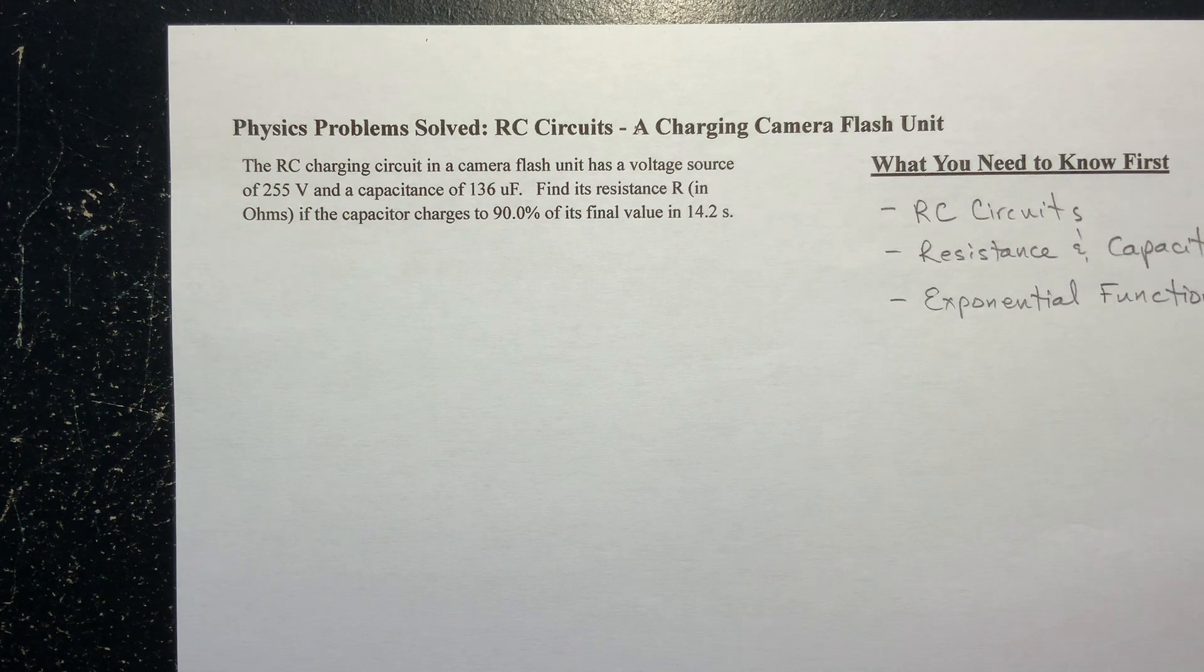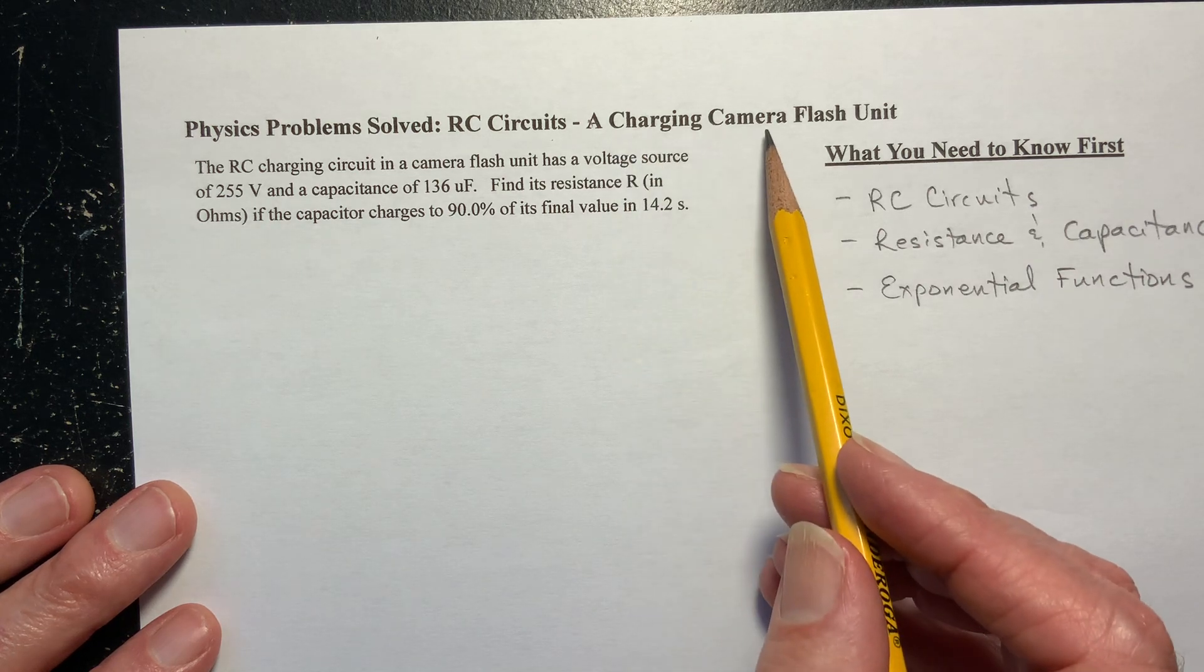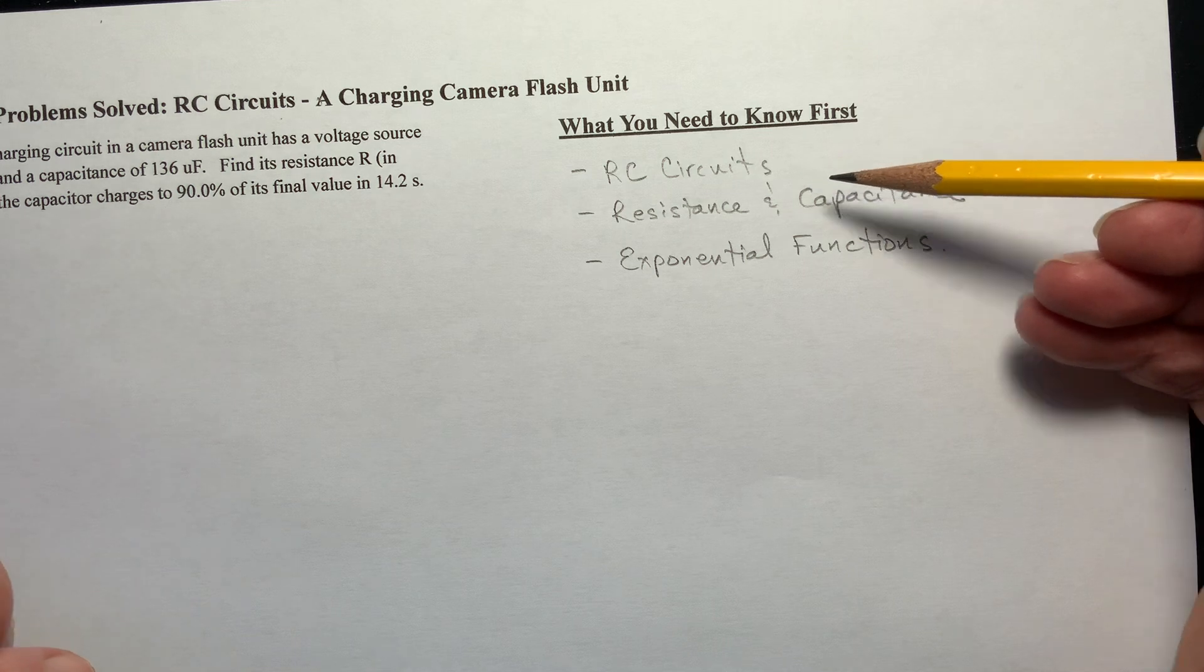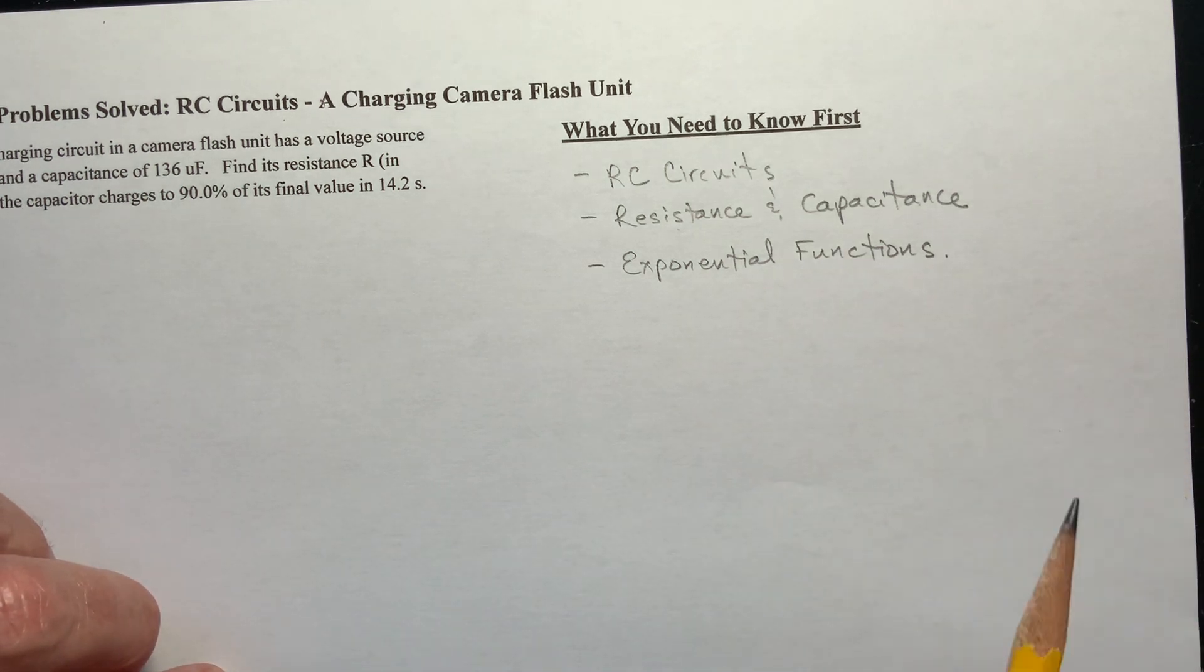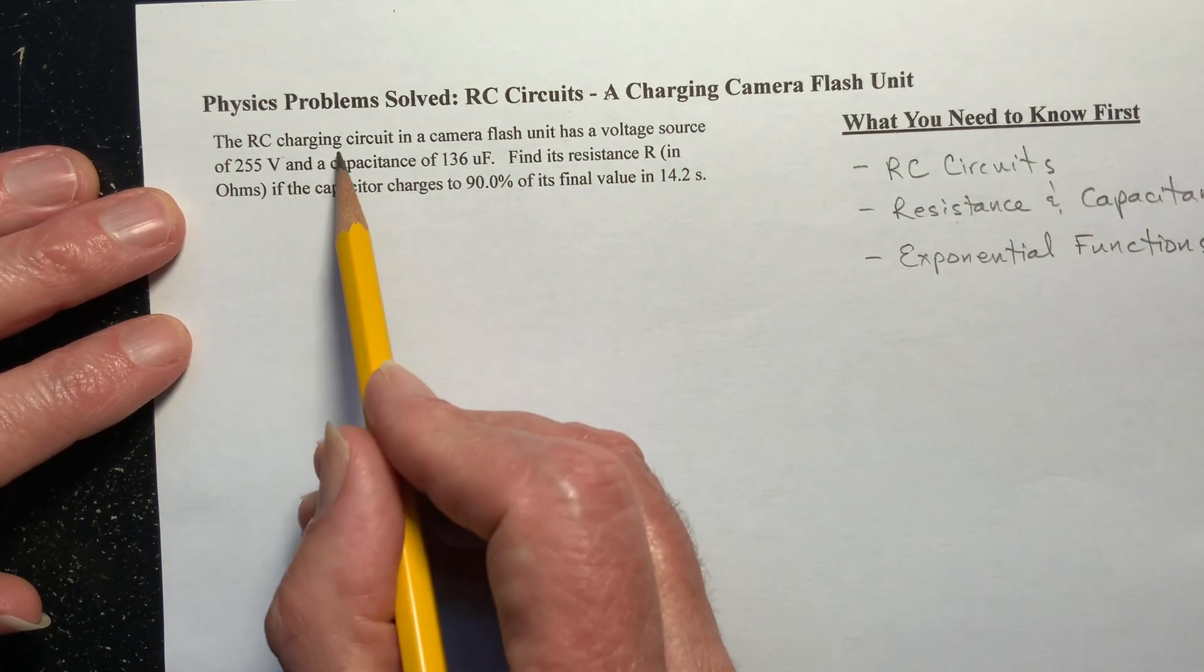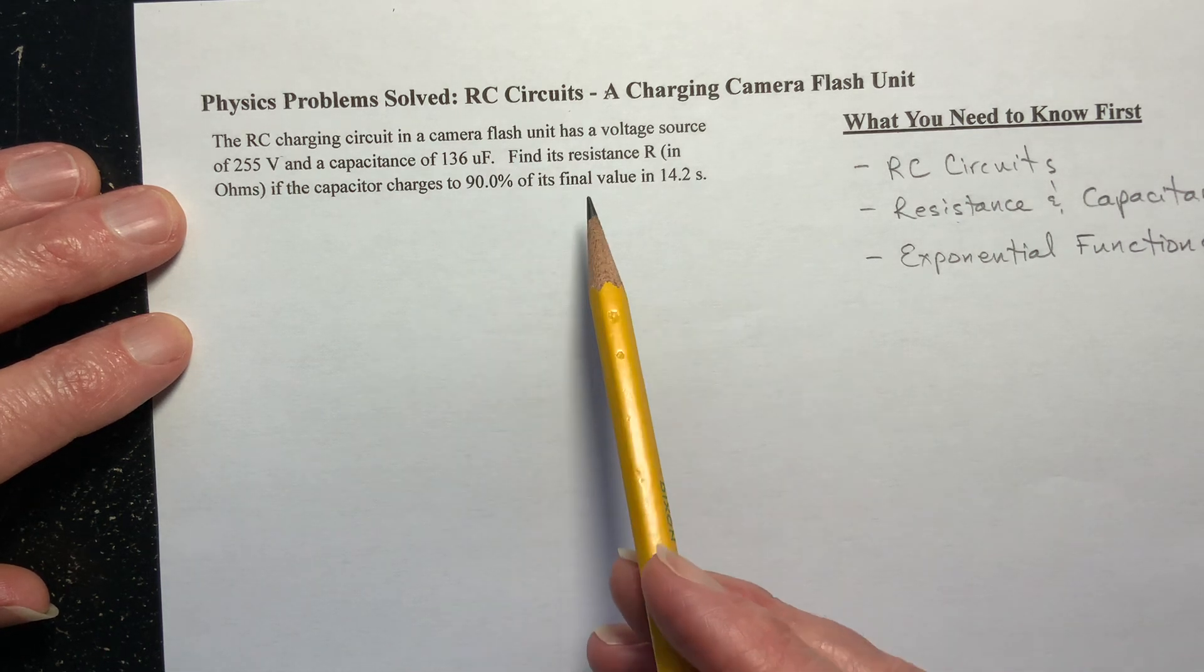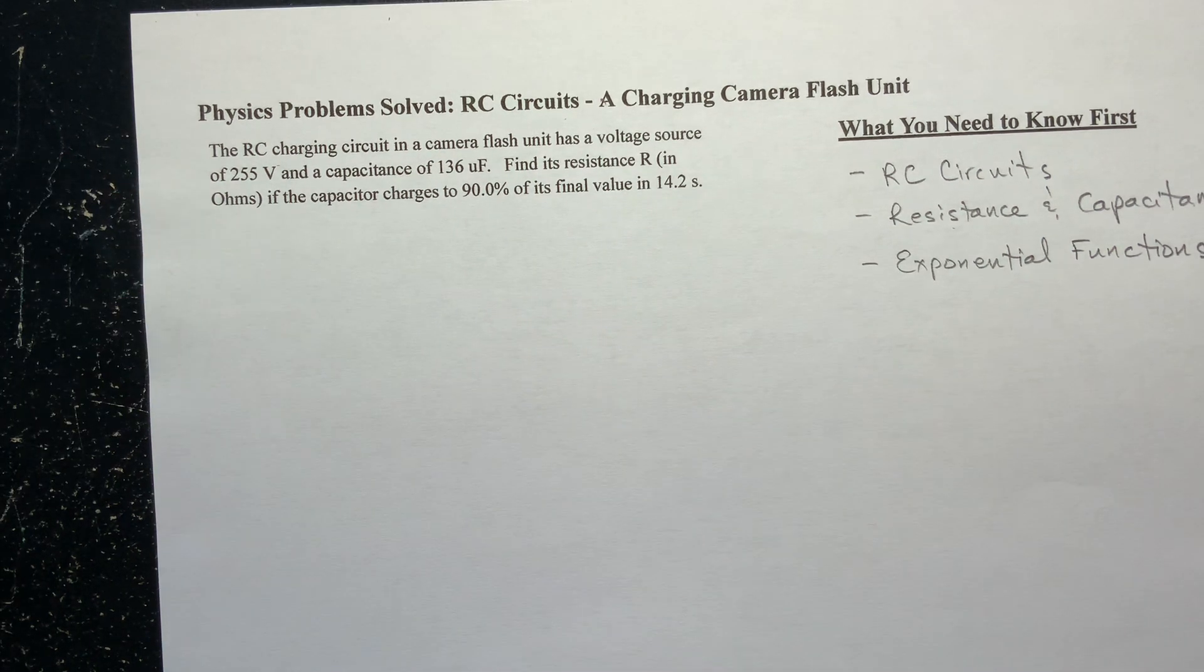Let's get to today's problem. It's an RC circuits problem, and we're going to be charging a camera flash unit. Here's what you need to know: you need to know a little bit about RC circuits, where R is resistance and C is capacitance. We're going to be dealing with exponential functions, so hopefully you're familiar with that. Now let's read the problem. We have an RC charging circuit in a camera flash unit. It has a voltage source of 255 volts and a capacitance of 136 microfarads. Find its resistance in ohms if the capacitor charges to 90% of its final value in 14.2 seconds.